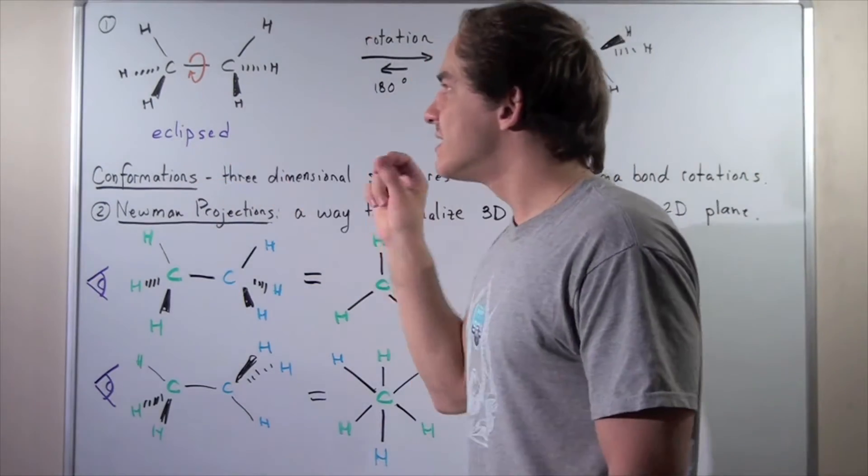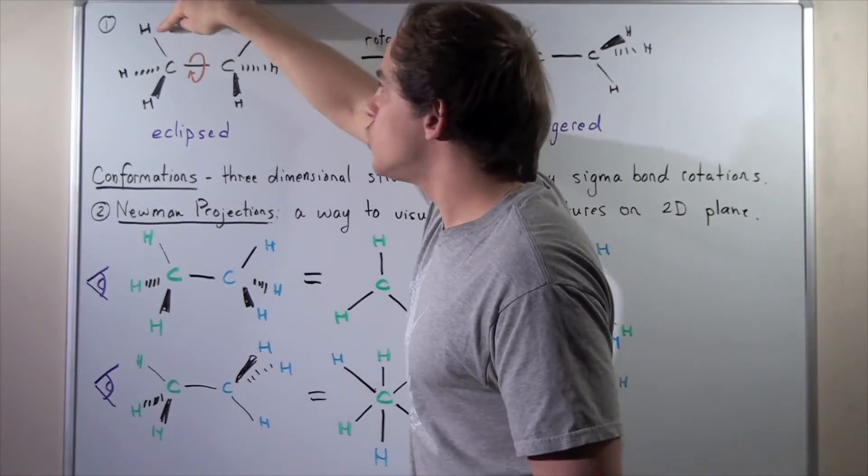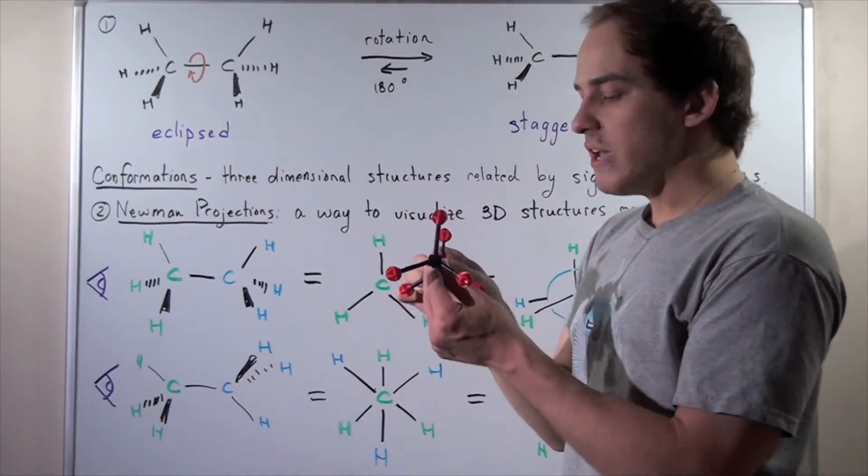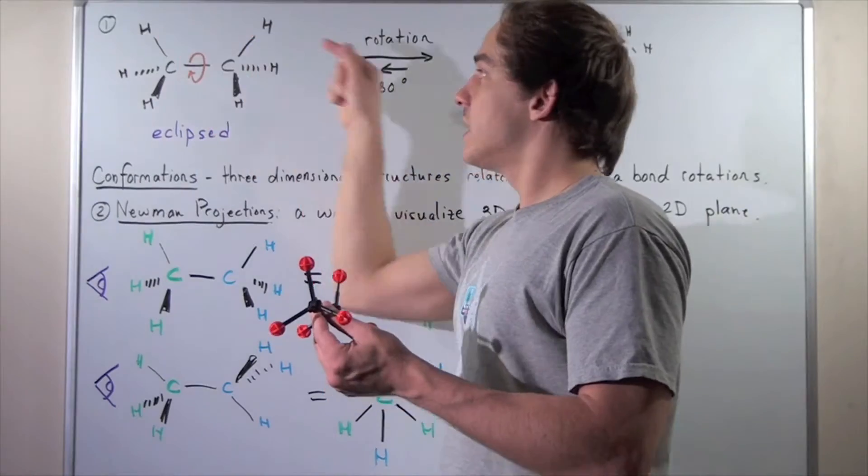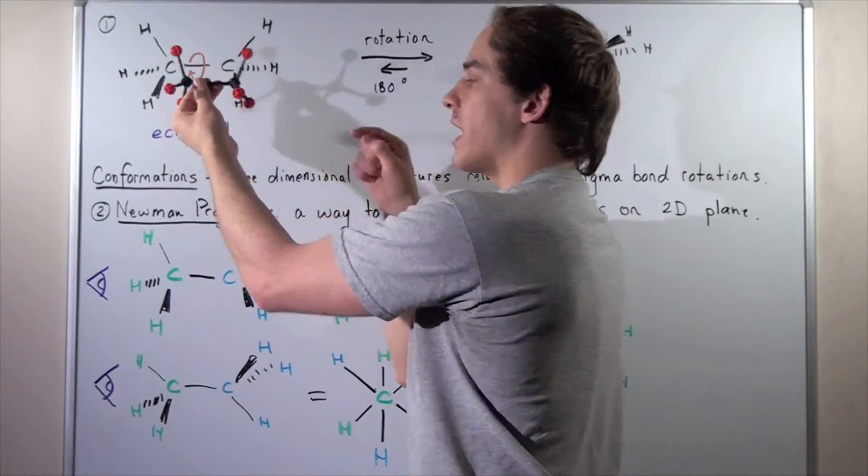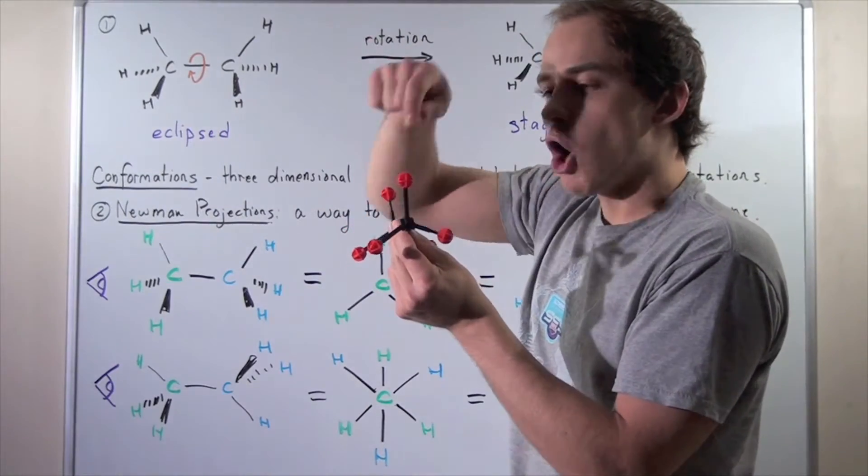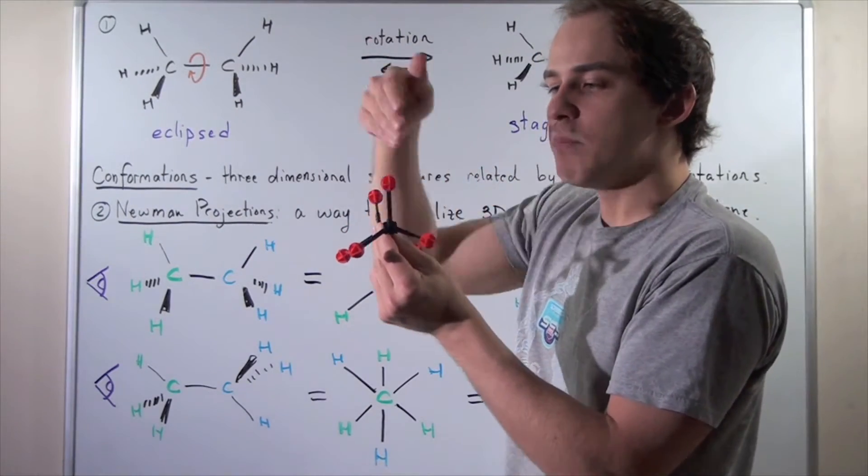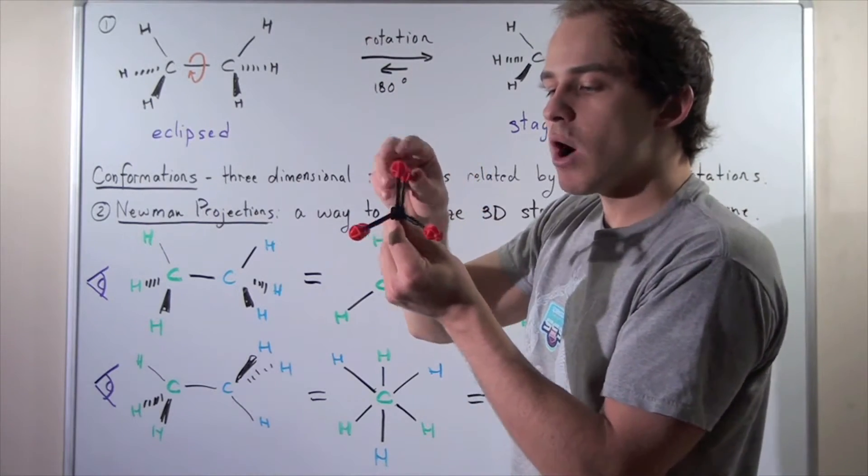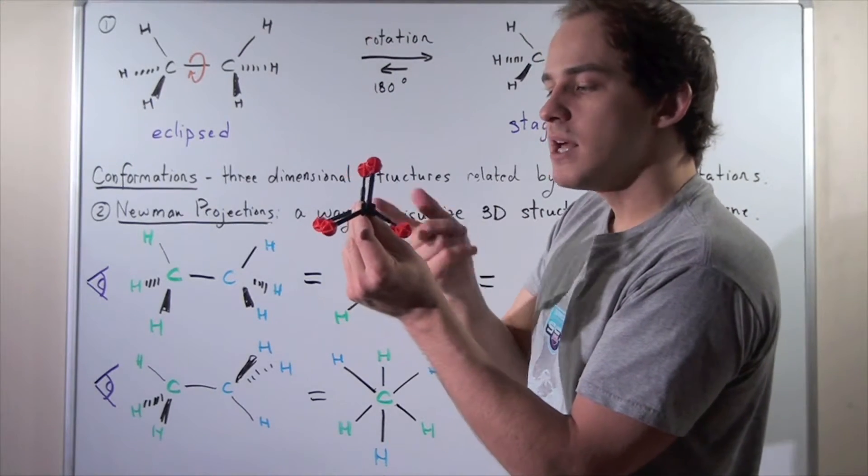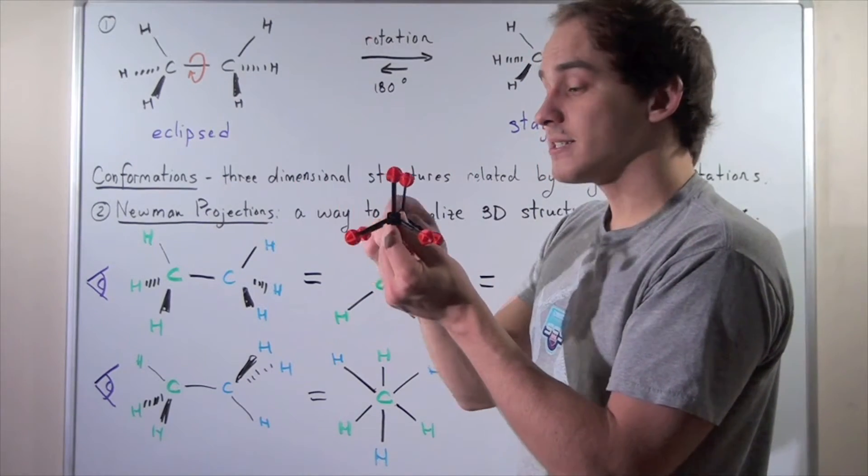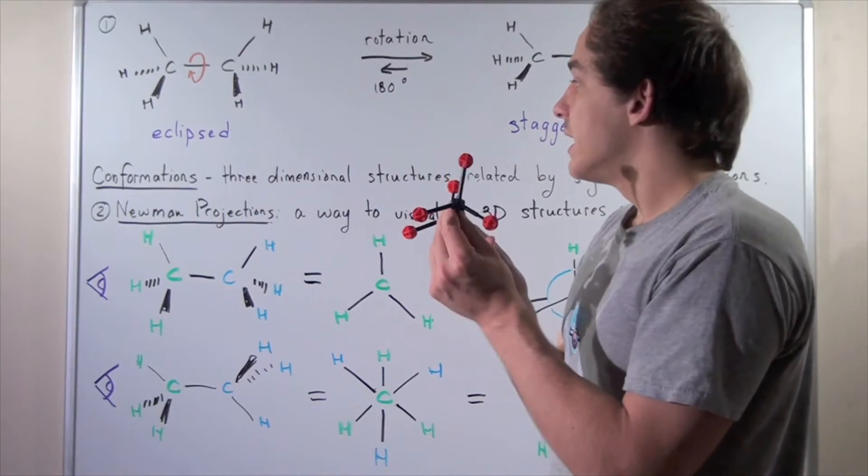Eclipsed simply means that these two C-H bonds are eclipsed—they're on the same plane. If we look this way on our molecule, we're going to see that this carbon-hydrogen bond exactly aligns with this carbon-hydrogen bond. Likewise, this carbon-hydrogen bond aligns with this, and this carbon-hydrogen bond aligns with this one.